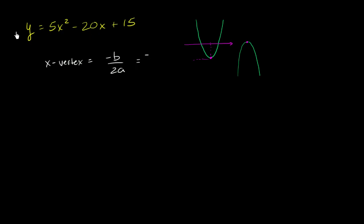So this is going to be equal to b is negative 20, so it's negative negative 20 over 2 times a, over 2 times 5. Well this is going to be equal to positive 20 over 10, which is equal to 2.